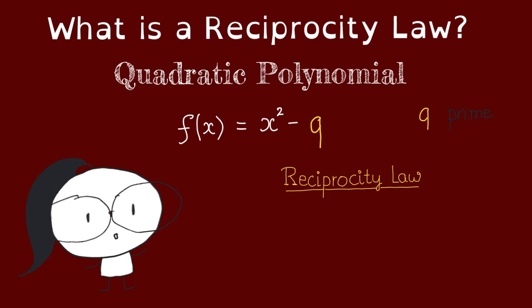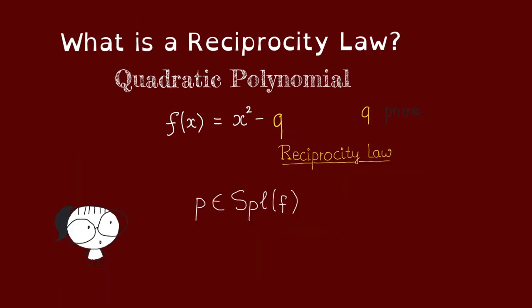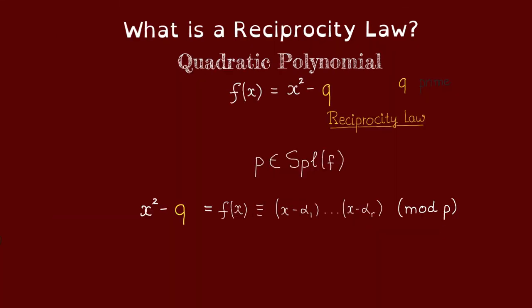Now a reciprocity law should give us a condition for a prime p to lie in split f. So when does this f split over p? Observe that that happens only if this polynomial has a root over p.